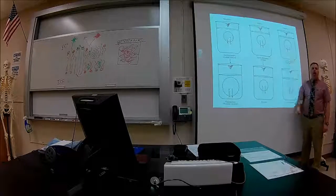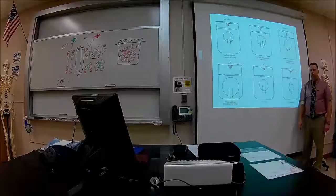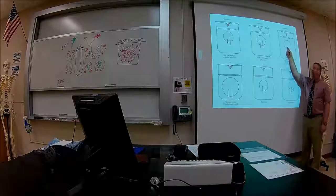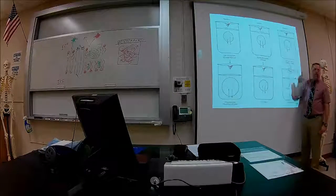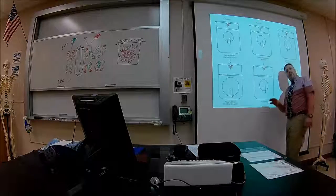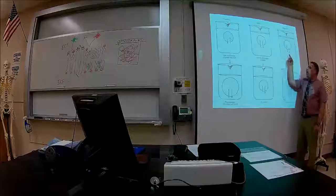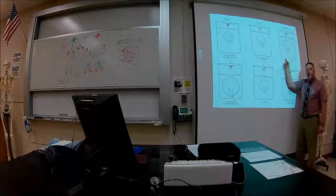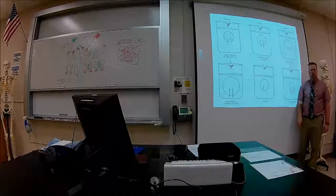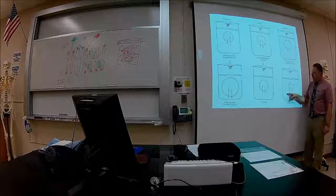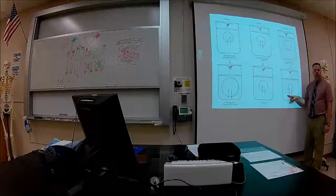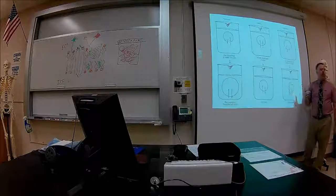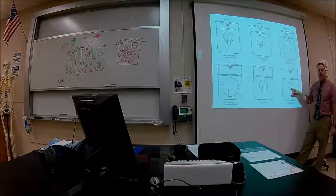Now let's look at a hypertonic solution. This is where there's less water between the dots on the outside of the cell, and more spacing inside. The only thing that can pass through the membrane is water. To make spacing equal inside and outside, would you expect water to leave or enter the cell? Leave the cell. When it leaves, the spacing equalizes and the cell shrinks — it shrivels.